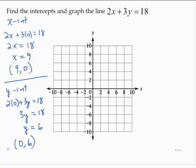Plotting those ordered pairs, 9, 0, 0, 6, and drawing the line through those points would give us this line.